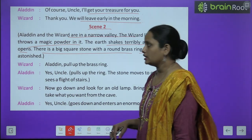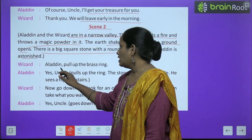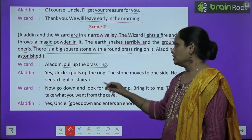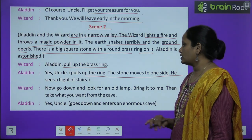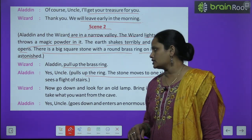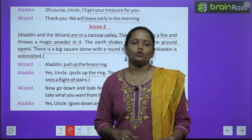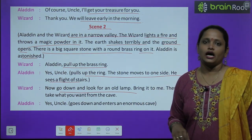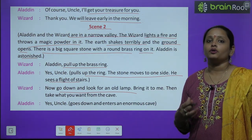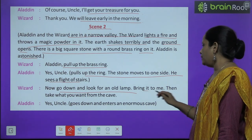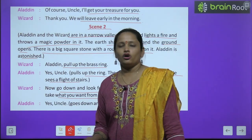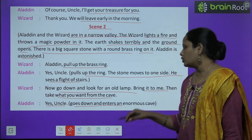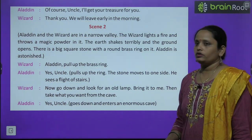Aladdin was astonished. The wizard said: "Aladdin, pull up the brass ring." Aladdin said: "Yes uncle." He pulls the ring, the stone moves to one side, and he sees a flight of stairs. The wizard says: "Now go down and look for an old lamp. Bring it to me, then take what you want from the cave." Aladdin went down and entered the enormous cave.